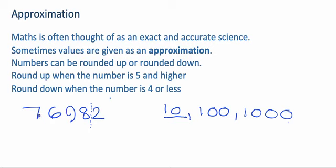So, when we approximate this value to the nearest ten, this becomes 76,980. So, that's the approximation to the nearest ten.